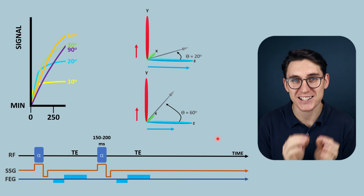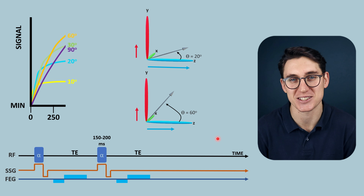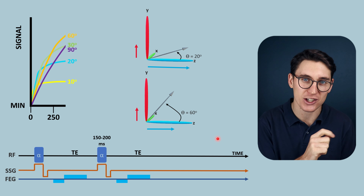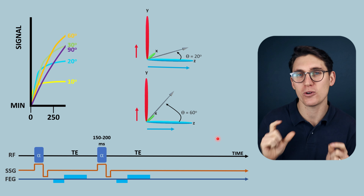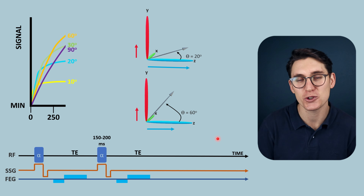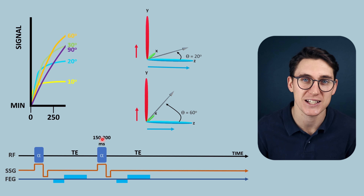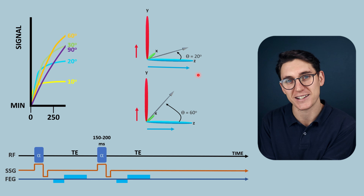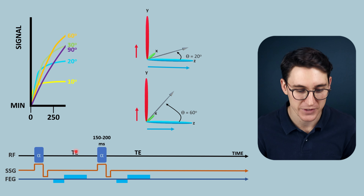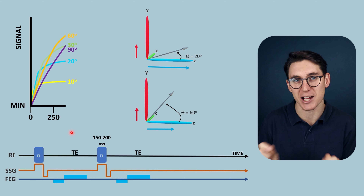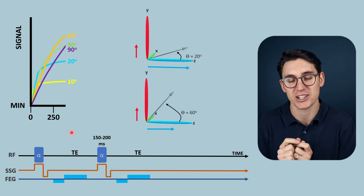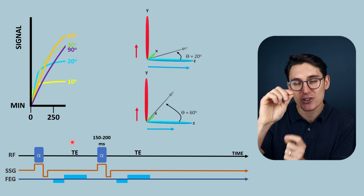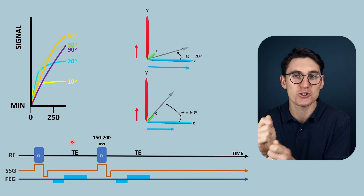Hello and welcome to the third and final part in this introduction to gradient echo sequences. We left off in the previous talk by looking at how changing the flip angle could manipulate the contrast weighting within our image. We saw that small flip angles allowed us to still generate a T2-weighted image despite having very short TR times, because the small flip angle allowed for recovery of longitudinal magnetization prior to the next RF pulse, and differences in free induction decay between two tissues generated that T2-weighting.